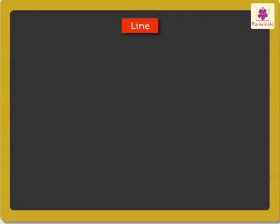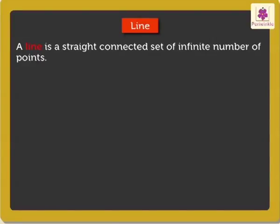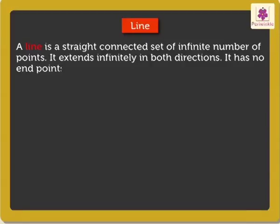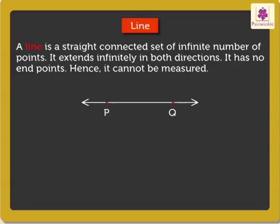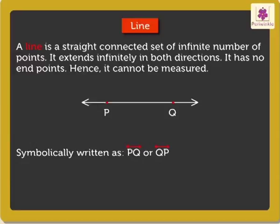Next is Line. A line is a straight connected set of infinite number of points. It extends infinitely in both directions. It has no end points. Hence, it cannot be measured. Look at this line. We represent it with letters and the symbol of the line above them like this. We read it as Line PQ or Line UP.